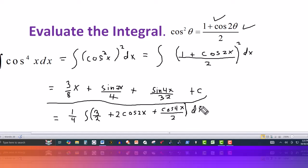So that's the answer there. Three eighths x plus sine of two x over four, plus sine of four x over 32, plus the constant of integration. Thanks for watching. We'll see you next time.